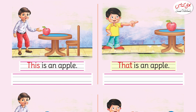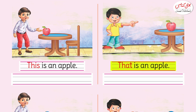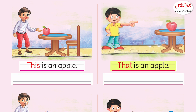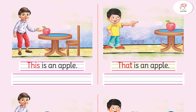Now, our next picture shows a boy. You will see that the apple is not close to him — the girl is pointing to it from a distance. So the apple is far from the girl. For things that are far from us, we use 'that'. So now we will start the sentence with 'that': 'That is an apple.'